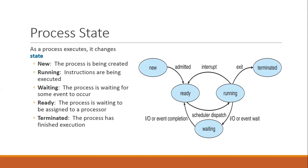The third possibility while a process is in the running state is some IO event wait. During execution, the process has generated a system call — for example, to receive input from the keyboard. In that case, the process will no longer execute; it must wait until the input becomes available. So the process will move from running to the waiting state. In the waiting state, the process simply waits for the input to become available. As soon as the IO event completes, it will move from waiting to the ready state — not directly to the running state. From waiting it comes to ready, and from ready it moves to the running state.